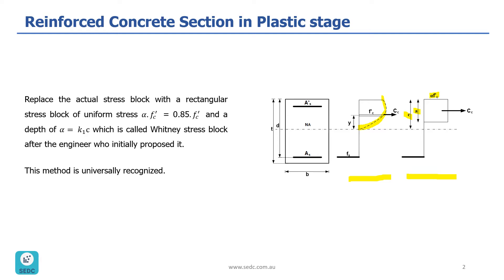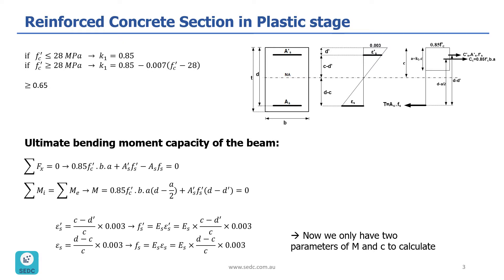This method is universally recognized. The value of k1 depends on concrete strength. So if f prime c is less than 28 MPa, k1 is 0.85. If f prime c is larger than 28 MPa, then k1 is 0.85 minus 0.007 times (f prime c minus 28). Also, the value of k1 should always be larger than or equal to 0.65.